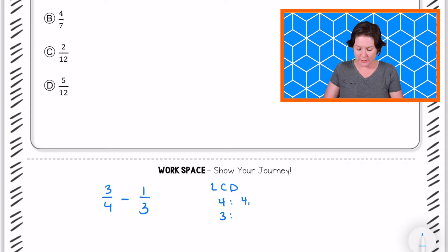So if I count by fours, that would be four, eight, twelve, sixteen, twenty. Let me stop there and see if I get a match. Moving on to the threes would be three, six, nine, twelve. I've got a match.